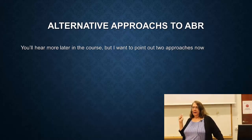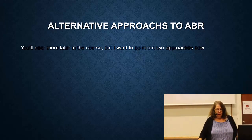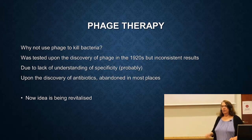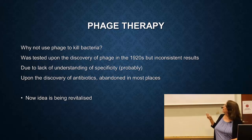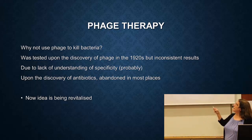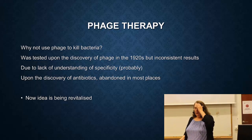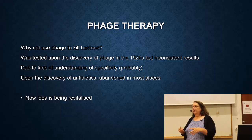To end today I'm going to talk about alternative approaches to antibiotic resistance. The first one is the idea of phage therapy - why not just use phage to kill bacteria? That's kind of their job. This was tested around the time of the discovery of phage in the 1920s. They had that idea but got very inconsistent results - it worked sometimes and didn't work sometimes. We now know that not every phage infects every bacteria, but they didn't know that at the time.